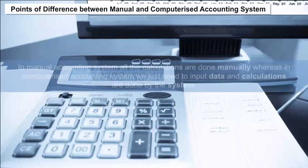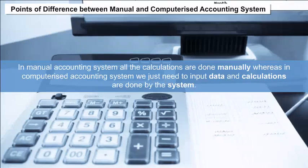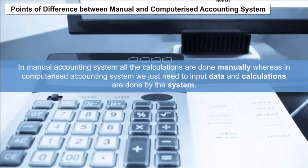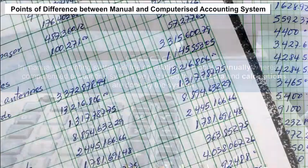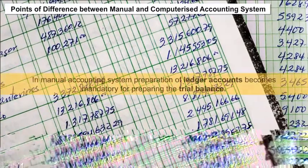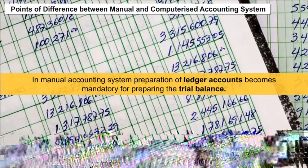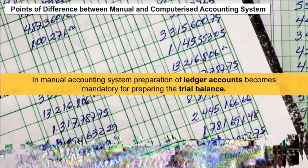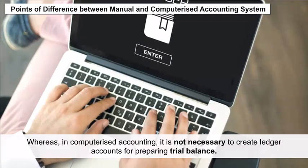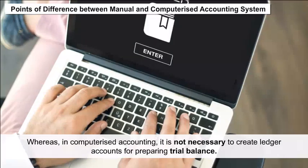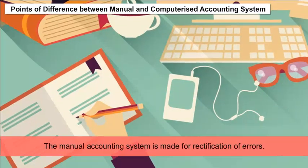Calculation: in a manual accounting system, all calculations are done manually, whereas in a computerized accounting system, you just need to input data and calculations are done by the system. Summarizing: in manual accounting, preparation of ledger accounts is mandatory for preparing the trial balance, whereas in computerized accounting it is not necessary to create ledger accounts for preparing the trial balance.